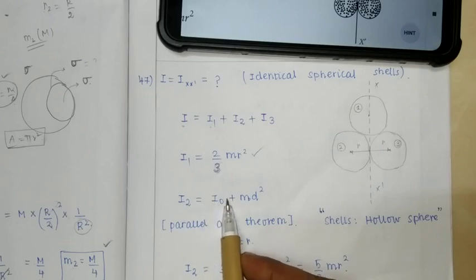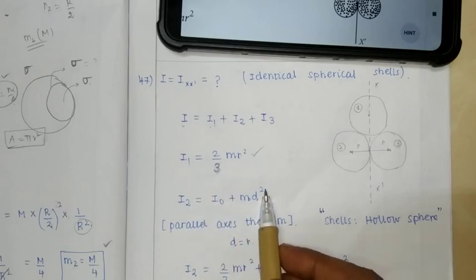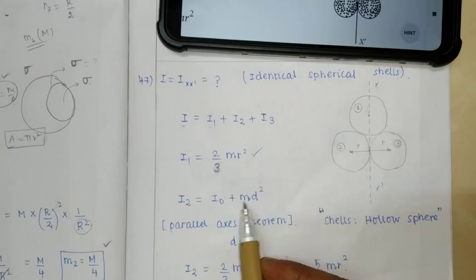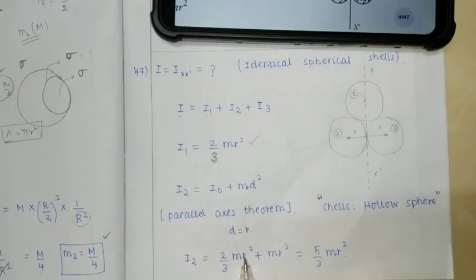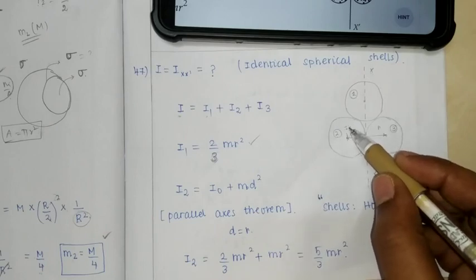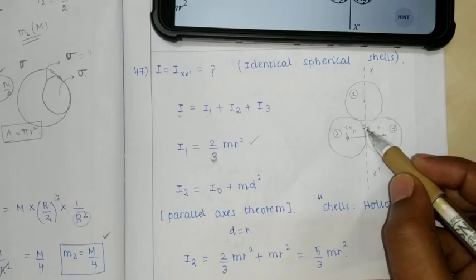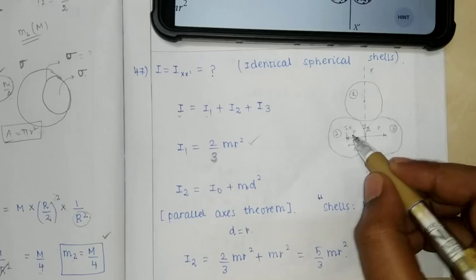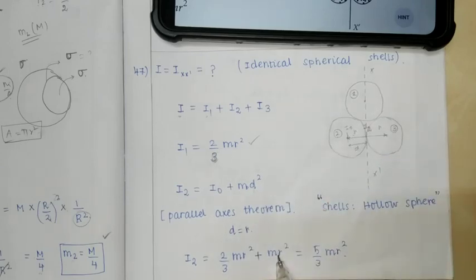I2 relative to xx' axis: The distance from center is d, which equals r. Using parallel axis theorem: I2 equals 2/3 mr² plus mr² equals 5/3 mr².